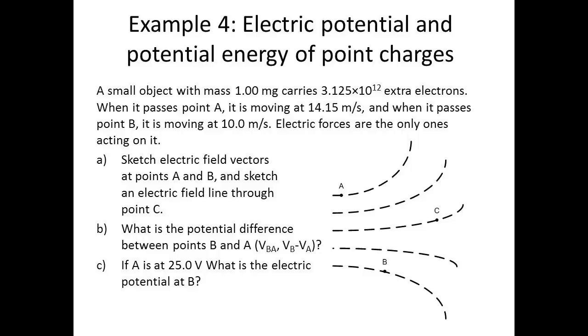Sketch electric field vectors at points A and B, and sketch an electric field line through point C. Part B, what is the potential difference between points B and A, meaning VBA or VB minus VA? And if A is at 25 volts, what is the electric potential at B?